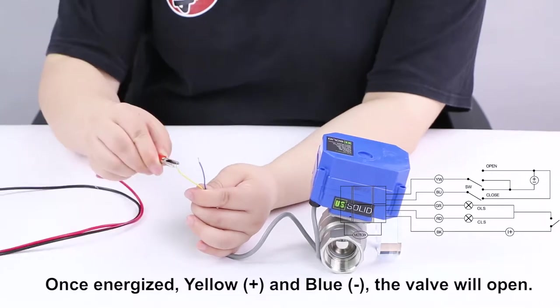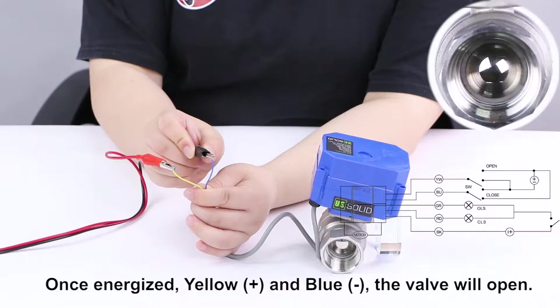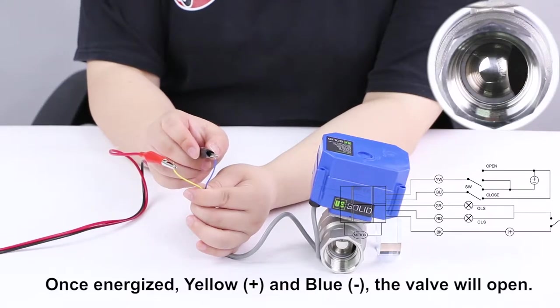If we connect the yellow wire to the positive pole and the blue wire to the negative pole, once energized, the valve will open.